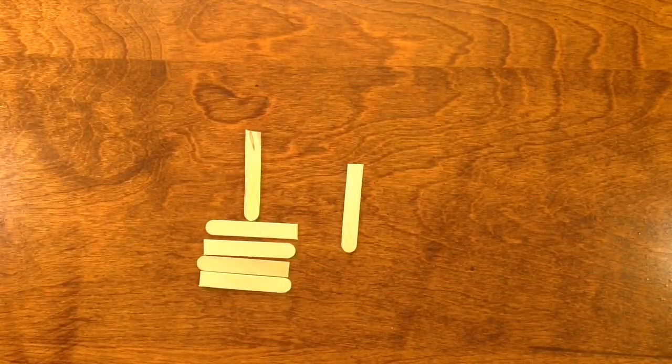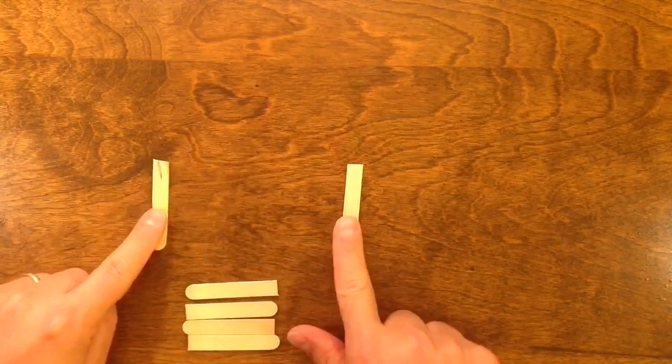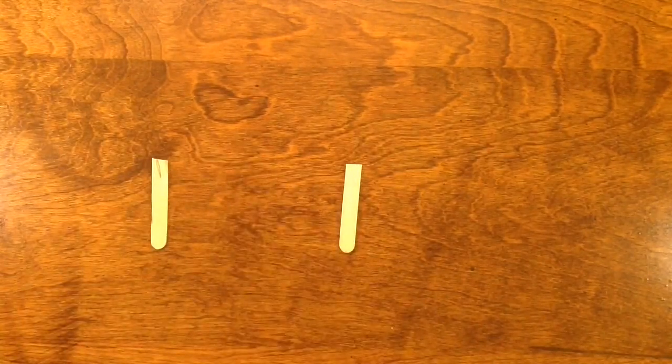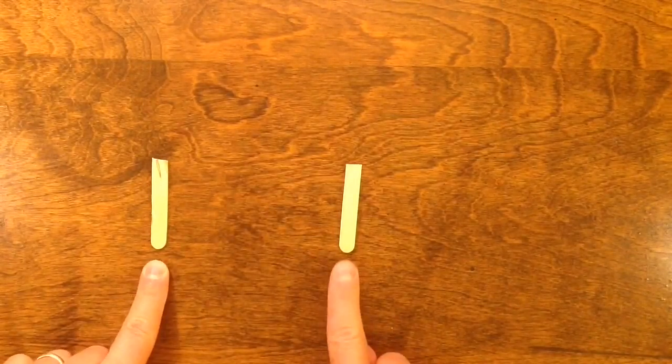So if I wanted to represent 101, again this is 91, I would have an empty spot, they didn't have a symbol for zero, but I would have an empty spot, a little bit of a gap, and so this would represent 100 and then one more.